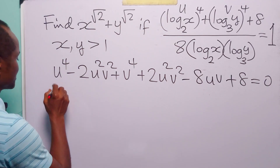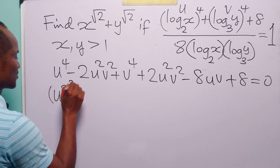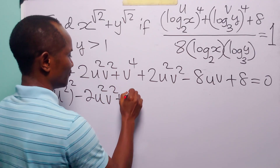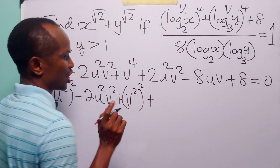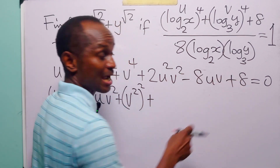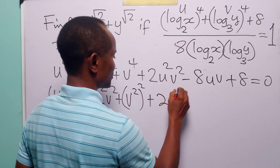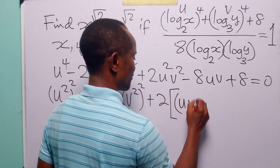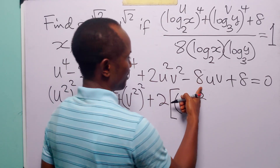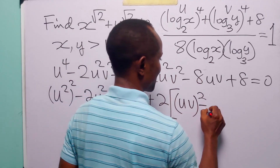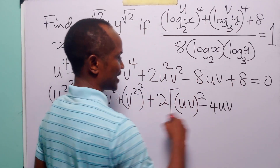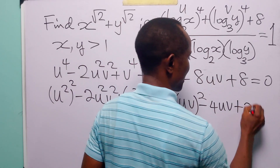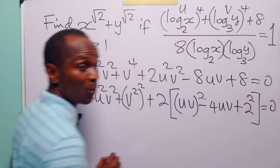Let us write u to the power of 4 as u squared squared, minus 2u squared v squared, plus v squared squared. Notice that these three terms can be divided by 2. So we have 2 into u squared v squared, minus 4uv, and 8 divided by 2 is 4, which we write as 2 squared. This is still equal to 0.